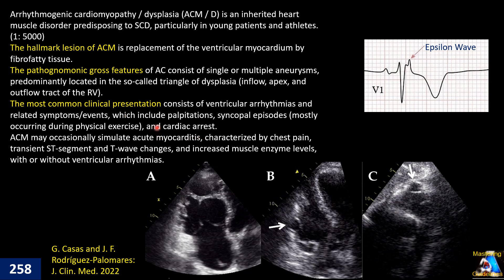The most common clinical manifestation of this disease is ventricular arrhythmia and its equivalents, such as palpitation, syncopal episodes, and especially cardiac arrest after exercise. Depending on the degree of myocardial involvement, the patient can gradually develop right ventricular enlargement and systolic dysfunction, as well as left-sided involvement if present.